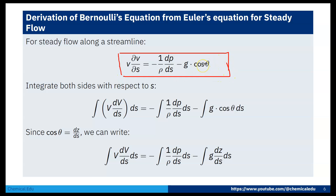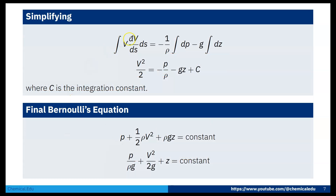From the Euler equation, I will derive Bernoulli's equation by integrating both sides with respect to S. Using cosθ = dz/dS, we integrate: ∫V dV = −(1/ρ)∫dP − g∫dz, which gives V²/2 = −P/ρ − gz + C.